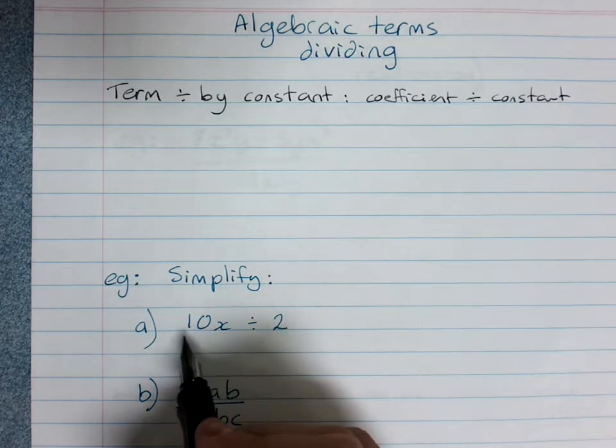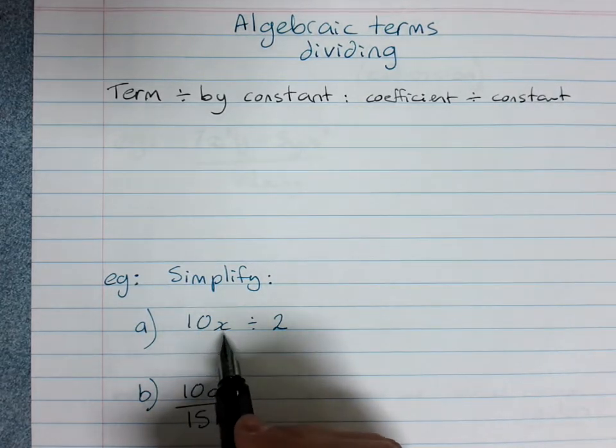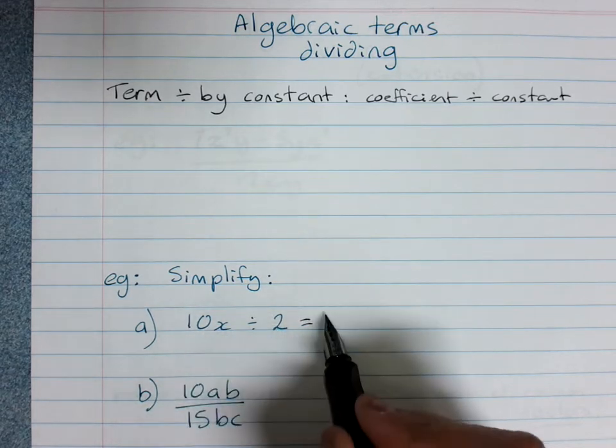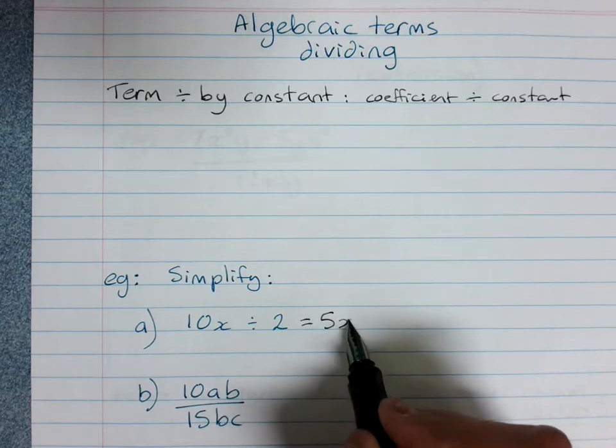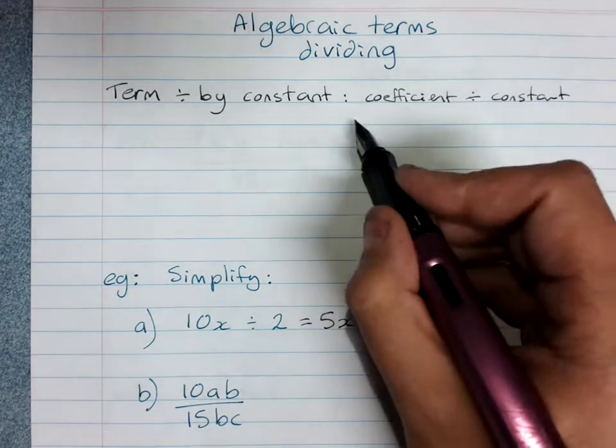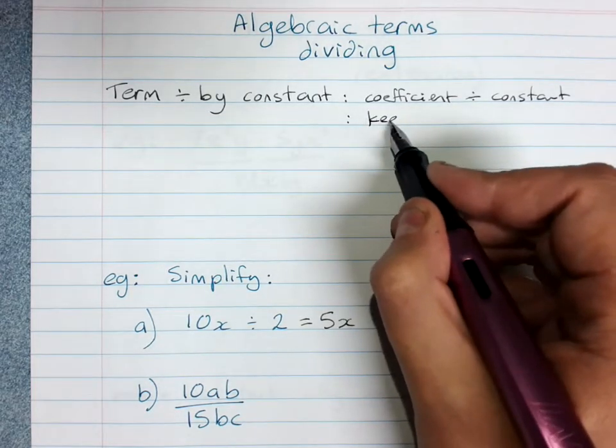So 10x divided by 2. We're sharing 10 xylophones between two people. Everyone gets 10 divided by 2 is 5 xylophones, 5x. So you just do the coefficient divided by the constant and keep the pronumerals.